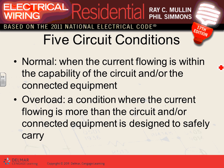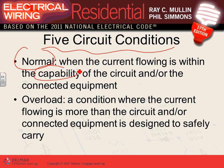There are five conditions for circuits. Normal operating condition is when the current is within the capability of the circuit and the equipment. For example, these lights above your head are under normal operating condition — the ampacity being pulled out of these conductors and circuit breakers is within the capability of the conductors, equipment, and circuit breakers.